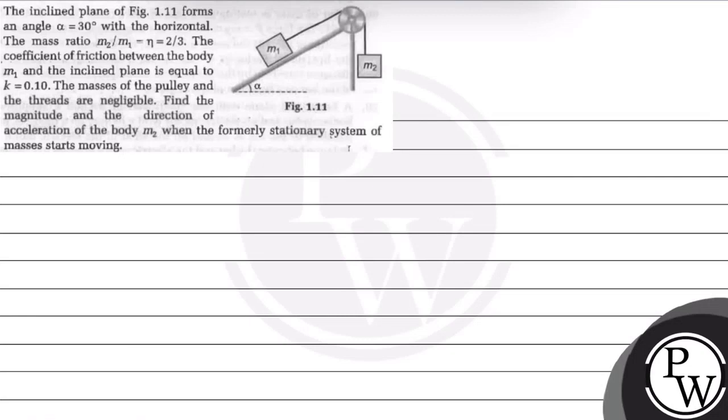Hello Bacho, let's read this question. The question says, the inclined plane of figure 1.11 forms an angle alpha equal to 30 degrees with the horizontal.